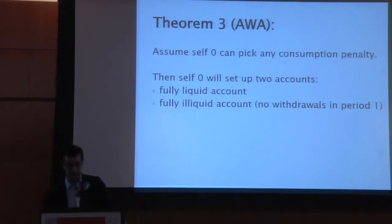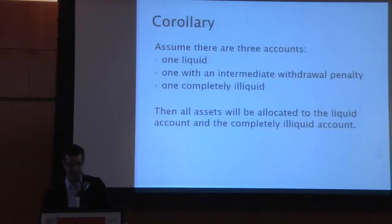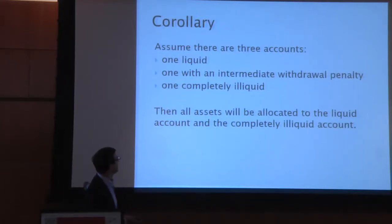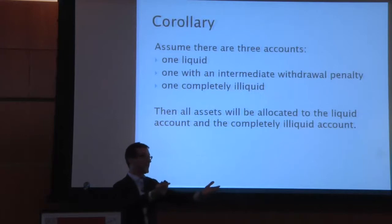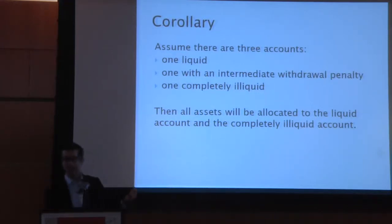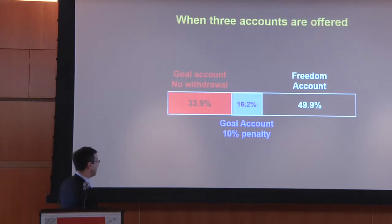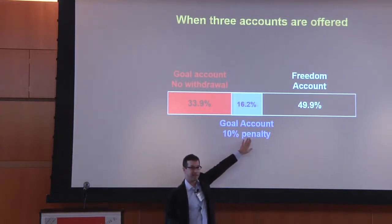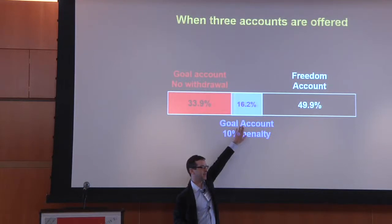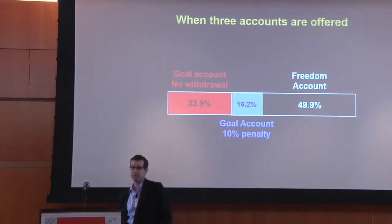That admits a corollary. Assume three accounts: one liquid, one with an intermediate withdrawal penalty, and one completely illiquid. Give agents this three-account system and ask them to allocate. The corollary is they'll allocate all money to the liquid account and the perfectly illiquid account, and no money to the intermediate account. That's not exactly what we see — in our experiment, the intermediate account absorbs 16% of the money, while the other two accounts are far more popular.